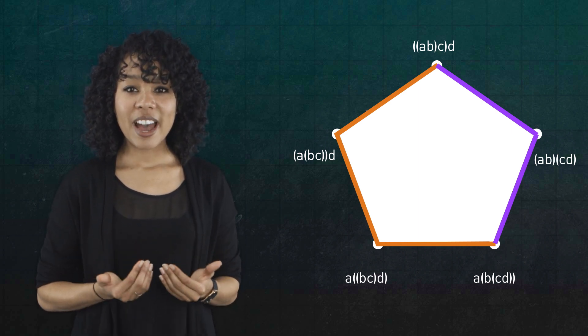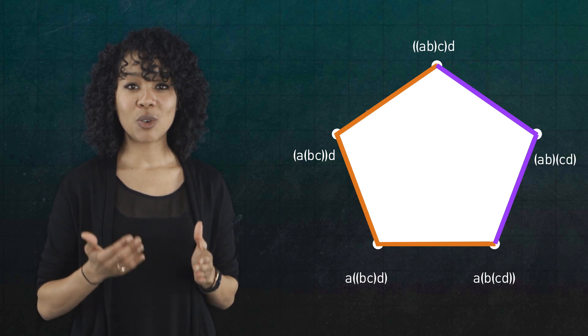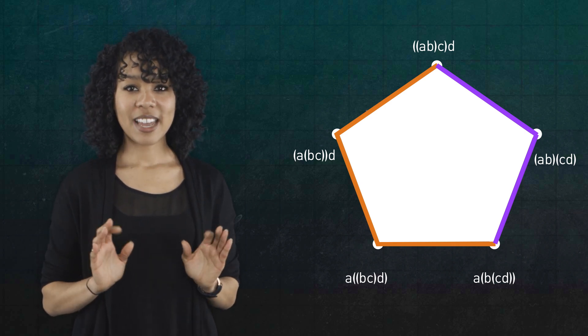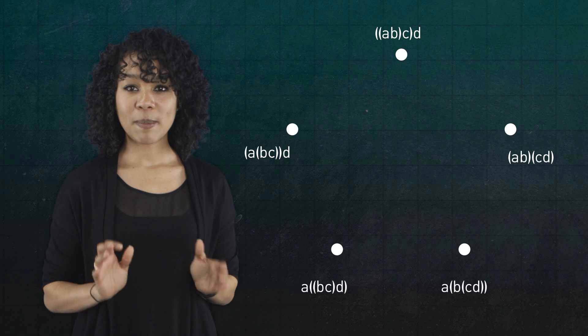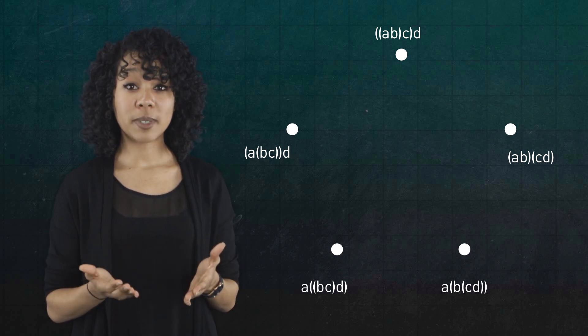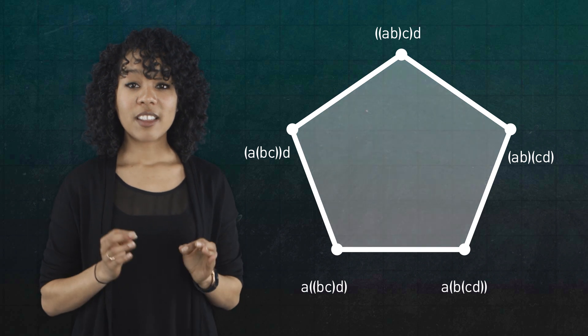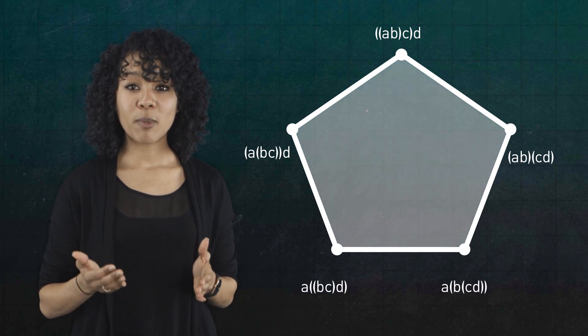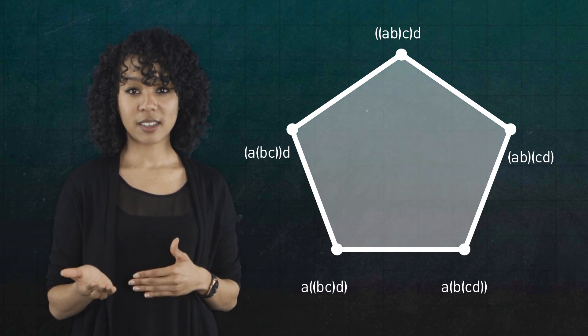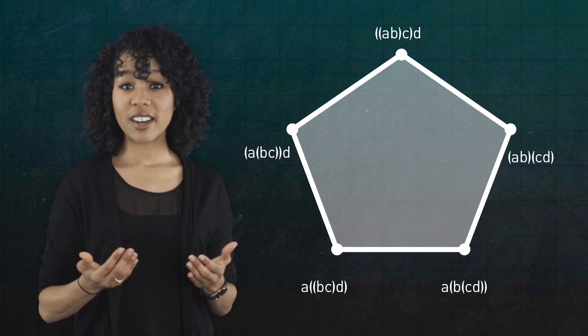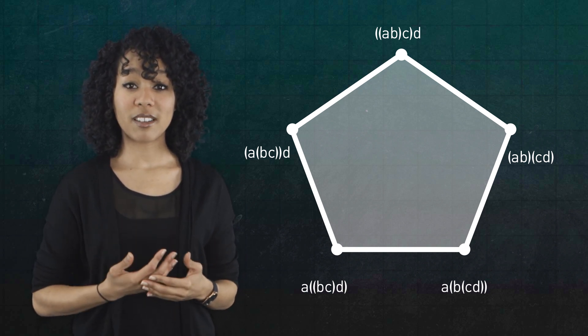In other words, we have a homotopy between two homotopies. All right, let's recap. Each vertex of this pentagon represents a way of multiplying four loops. Each edge represents a homotopy, or a path, between these ways. And the face of the pentagon represents a homotopy between the final two paths. The upshot now is that a pentagon encodes all of the ways that we can multiply four loops together.